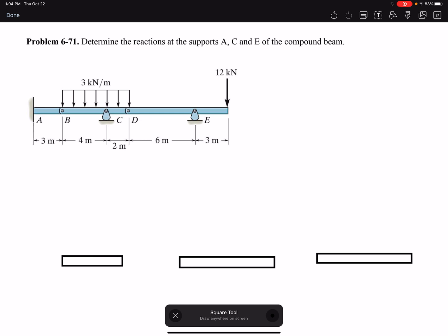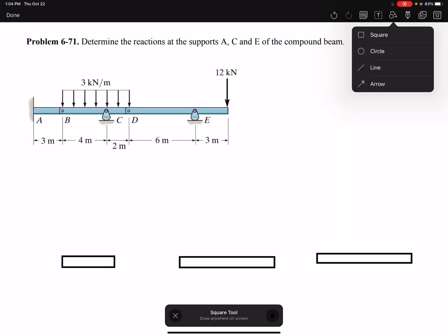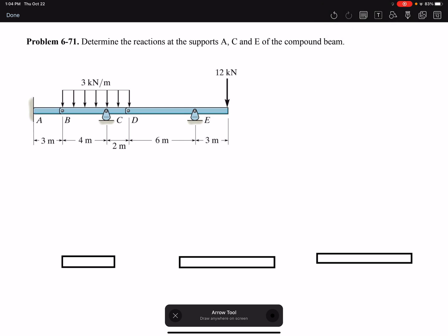Beam AB, the shortest beam. So I'm going to apply my forces here. For the beam on the right, I have 12 kN. I have a rocker support at E, so I have a reaction in Y.